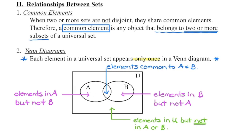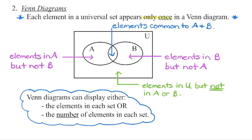The complement — everything within the universal set that is not included in sets A or B — is going to be outside the ovals. It's part of the universal set, but not in set A or set B.